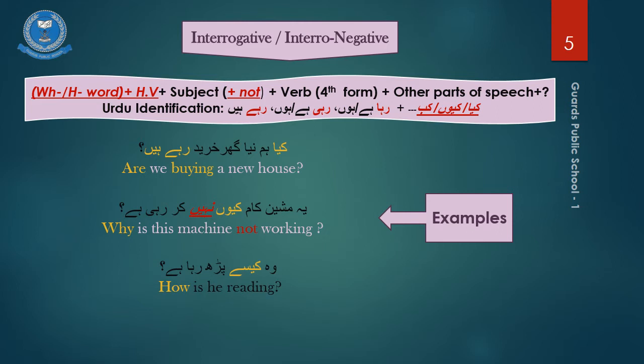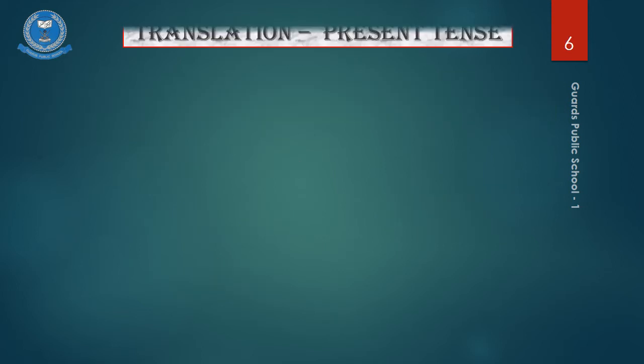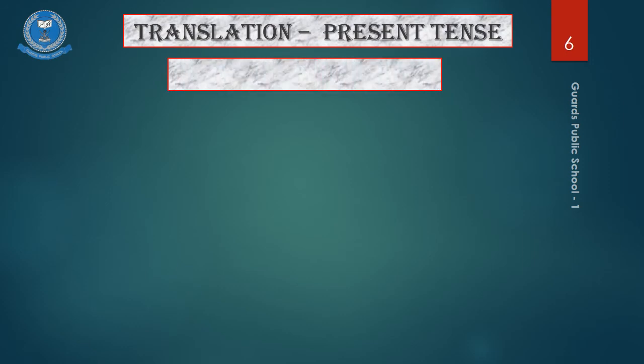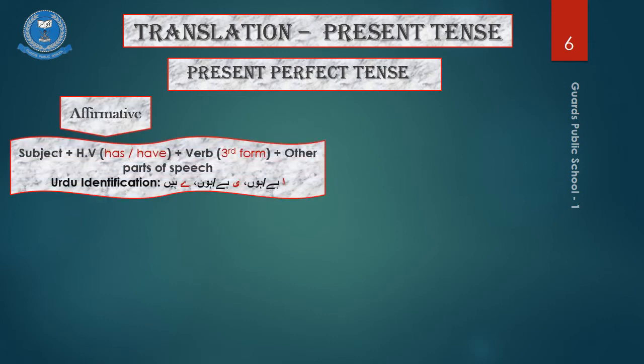Example number three, woh kaise par raha hai? How is he reading? As we know that the third aspect of the present tense, which is the present perfect tense, is usually used to show activities completed in the immediate past. And its sentence formation has a subject, a helping verb has or have, the past participle of the verb and the other parts of speech.